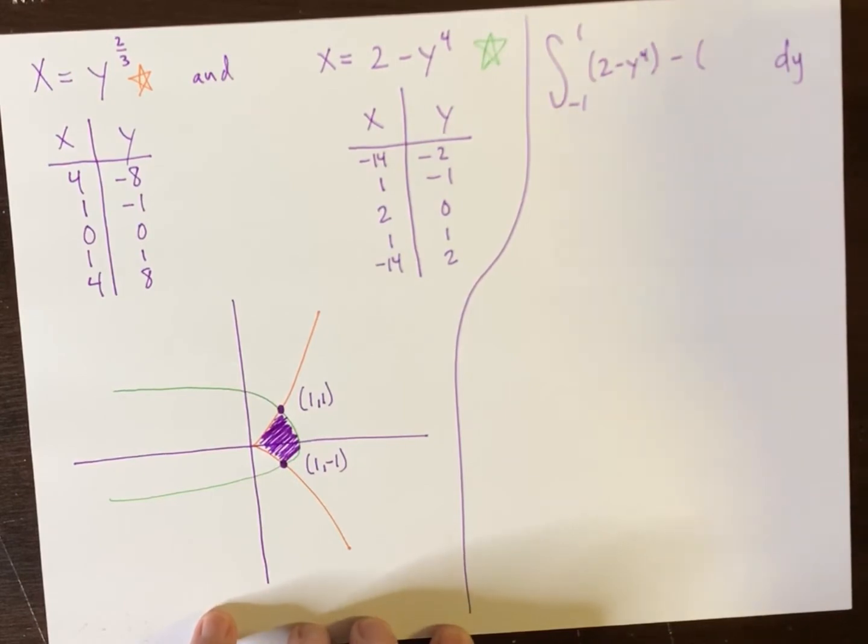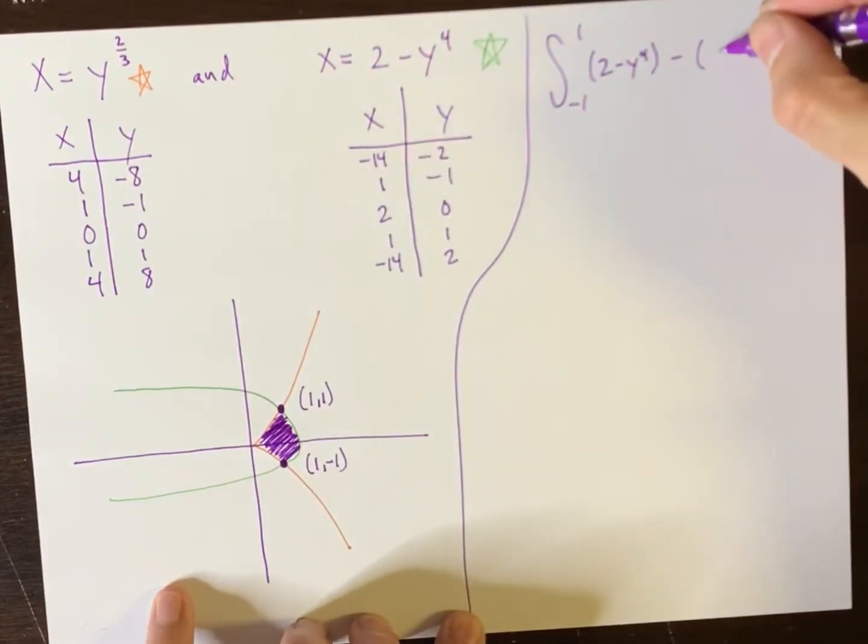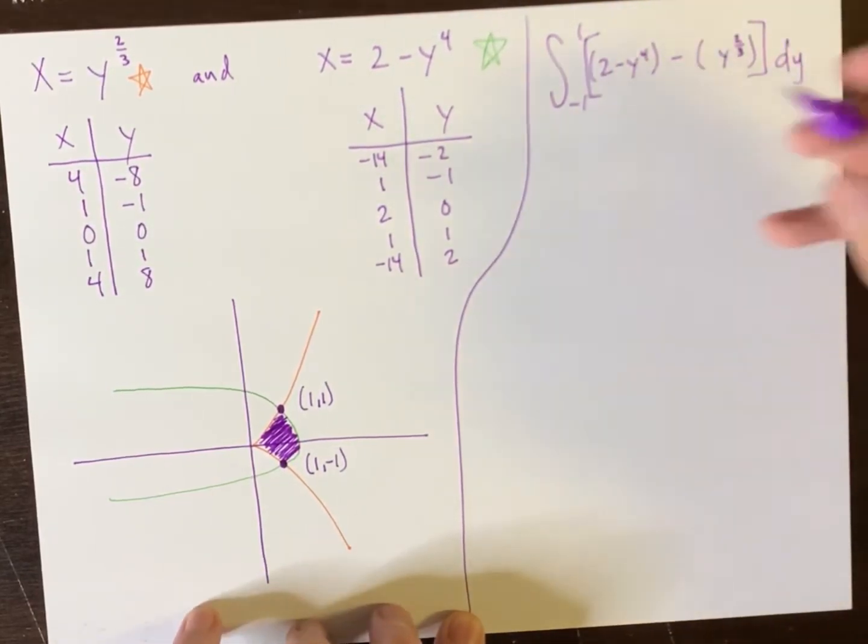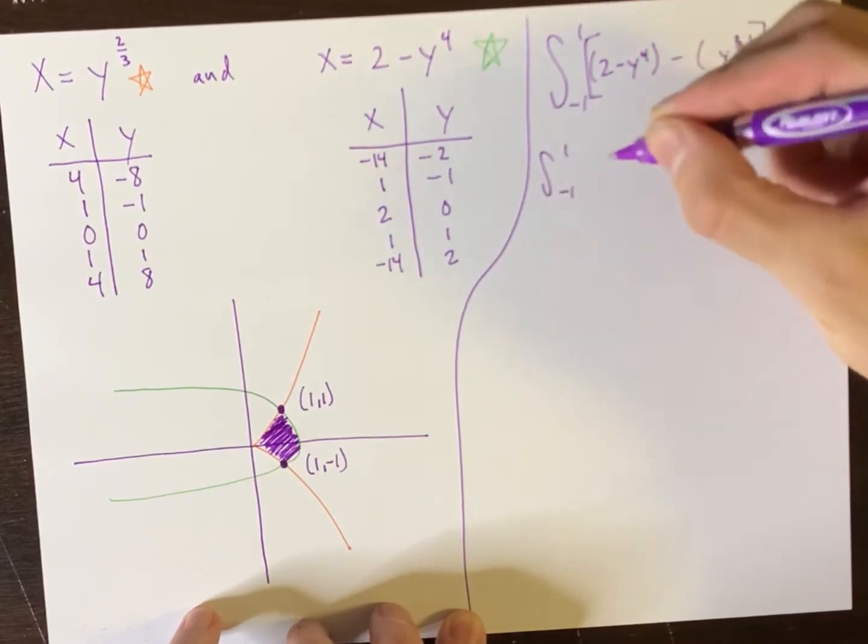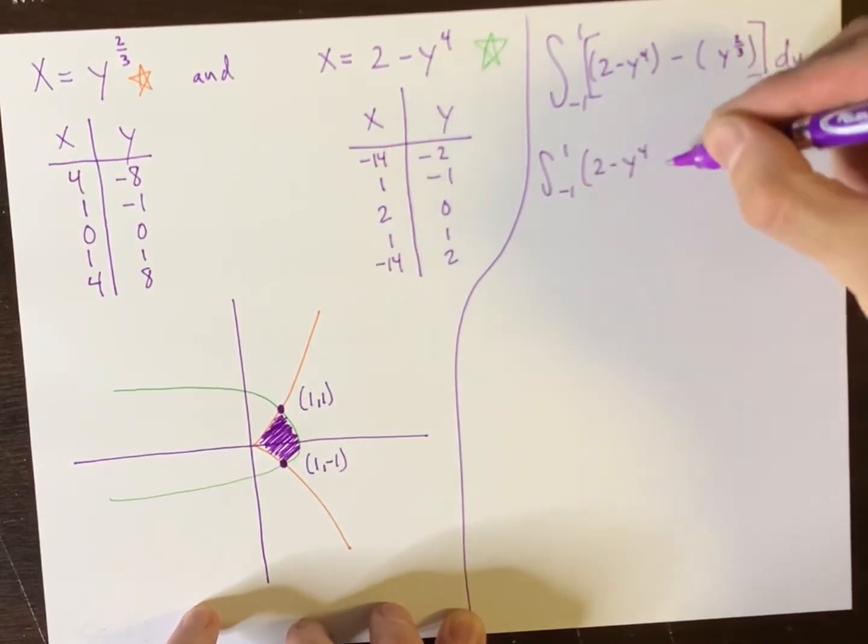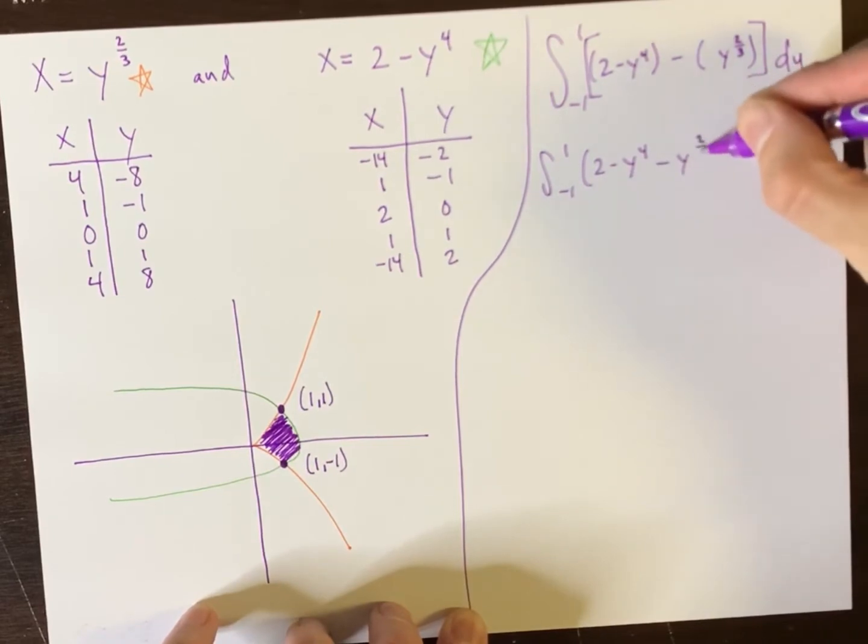So we have two minus y to the fourth minus. So it's always going to be the one on the right minus the one on the left, whenever your integration is in terms of dy. And let's see. So now it's the orange one, which is y to the power of two thirds. Bracket this, bracket that. And now we can distribute the negative so that we have two minus y to the fourth minus y to the two thirds.